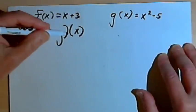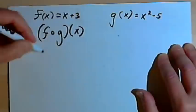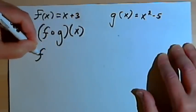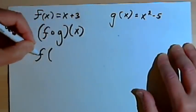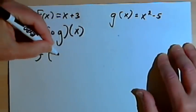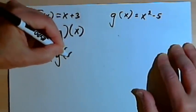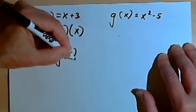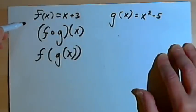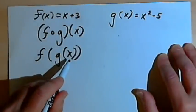Now another way to write this, which is much more convenient, would be f, and to the f you want parentheses, of g, and to g you want parentheses, of x. So this is f of g of x.